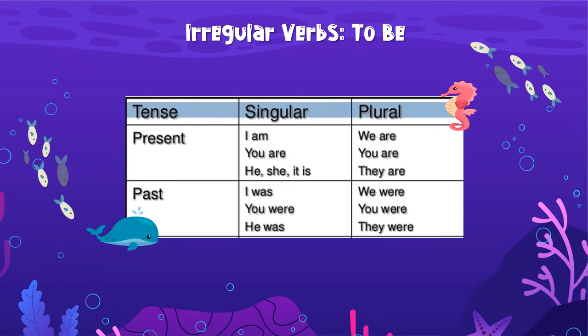Moving right along — our lesson today is about irregular verbs. Three irregular verbs and how we form them. Irregular verbs mean that they don't follow the normal pattern. When you have a typical verb, if the subject is plural, or I, or you, you leave it alone. But if it is a singular subject — minus I and you — you add an S. To form the past tense you add -ED; the progressive, you add -ING. But these irregular verbs don't follow those same rules. The first is the verb 'to be' — in Spanish, that would be 'estar.'